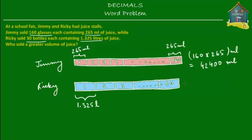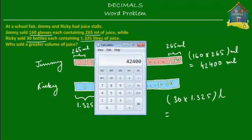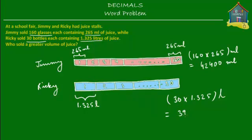Now let's find out how much Ricky sold. Ricky sold 30 bottles each containing 1.325 liters of juice, giving us a total of 30 times 1.325 liters of juice. Let's calculate: 30 times 1.325 equals 39.75. So this blue block is 39.75 liters.